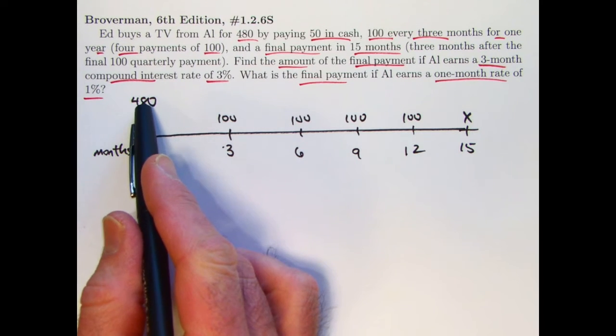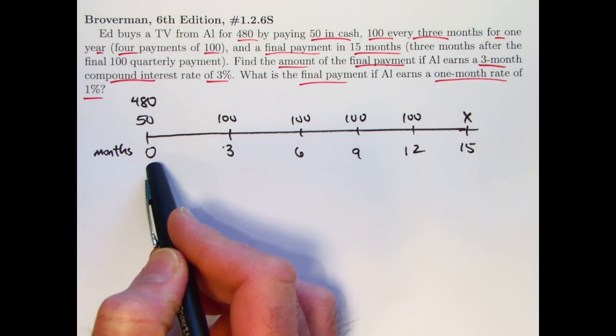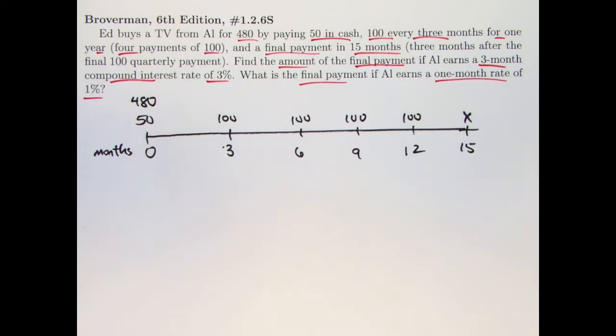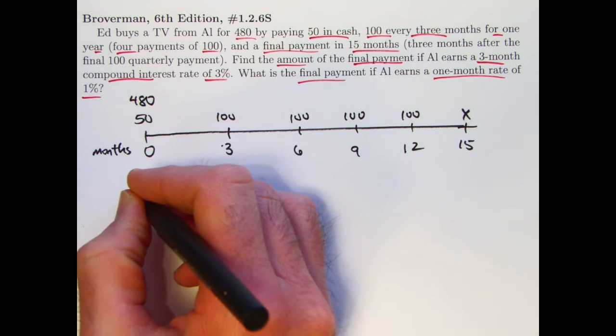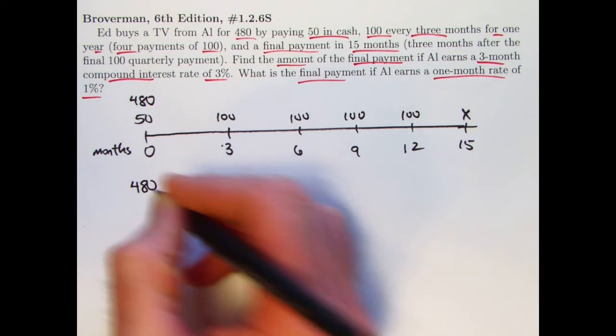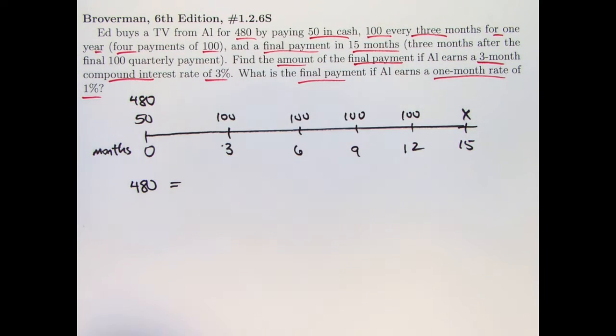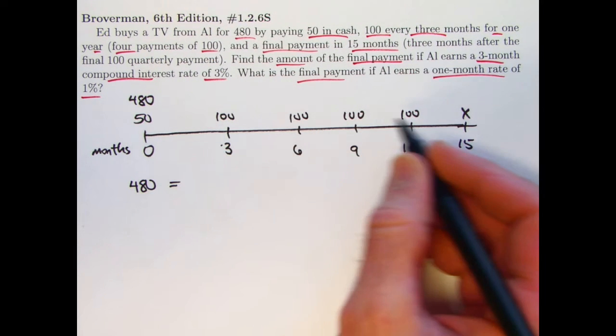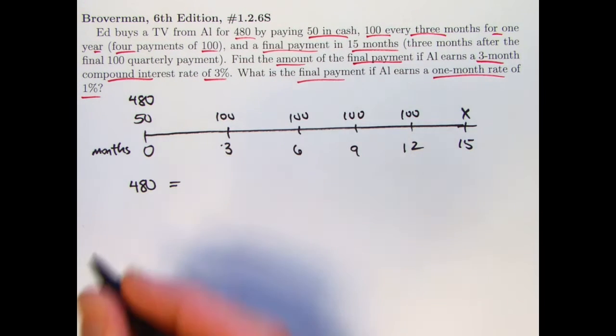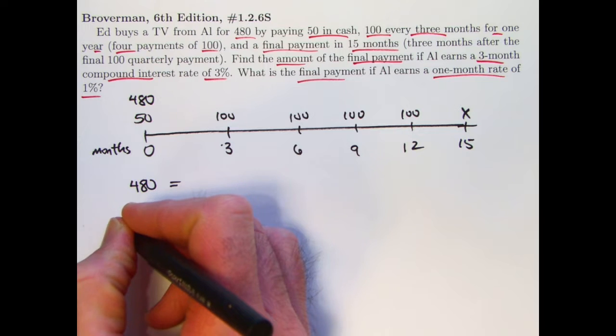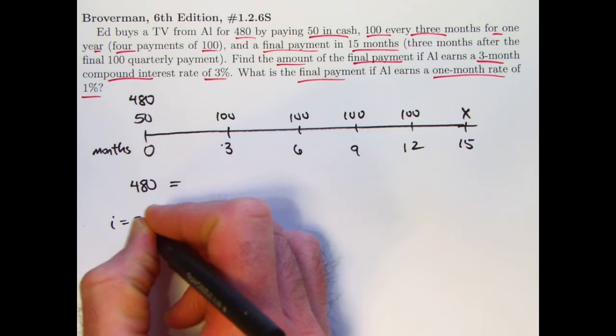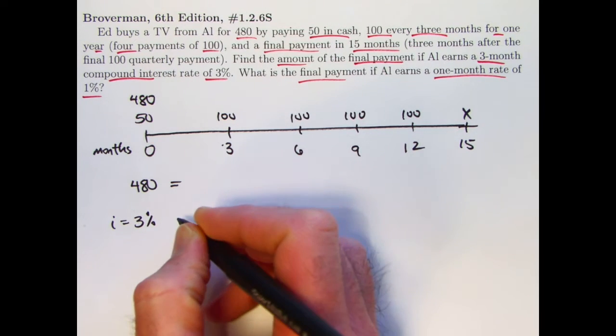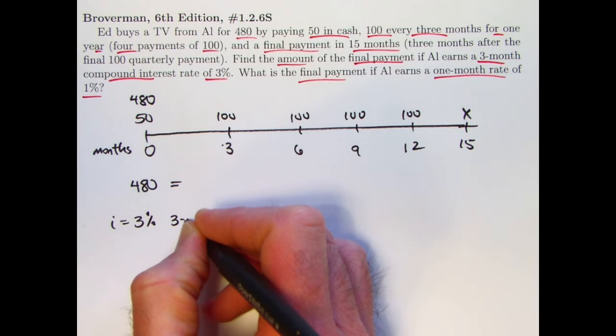Since you already have 480 at time zero, it's probably best to do the present values. That'd be a little bit quicker. So we need to essentially equate 480 with the present values of these 1, 2, 3, 4, 5, 6 payments based on a three-month interest rate of 3%.